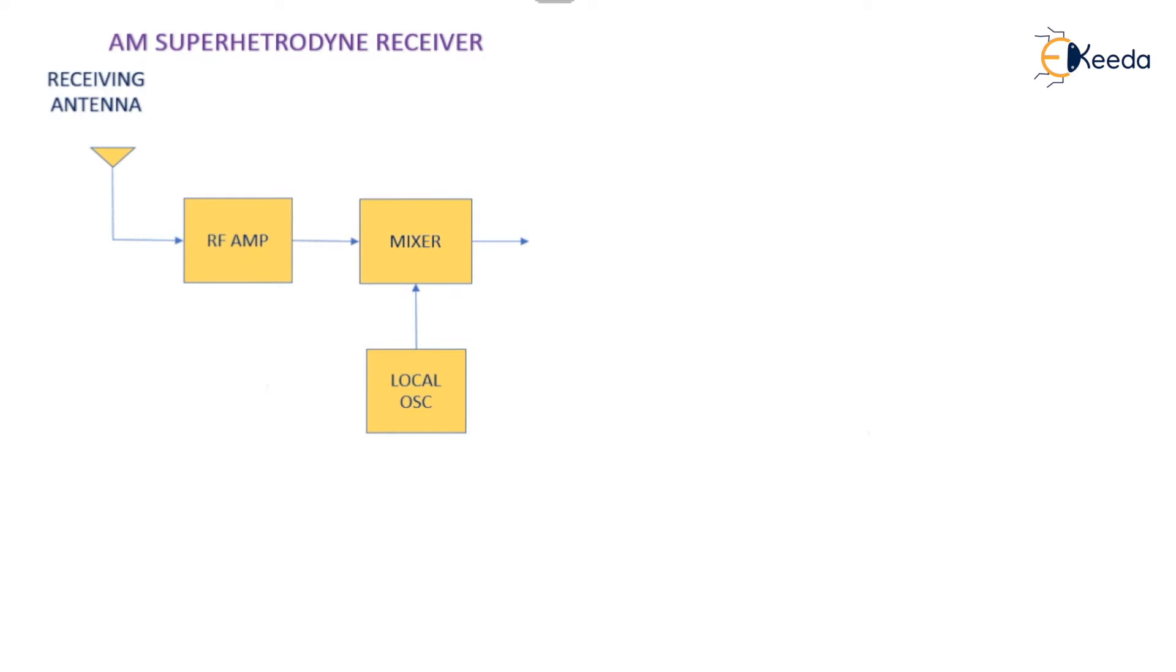Also, RF amplifier serves to prevent the re-radiation of the signal of the local oscillator and getting coupled to the receiving antenna. RF amplifier also provides necessary gain and the fidelity. Fidelity means the ability of a receiver to demodulate all modulating frequencies equally.